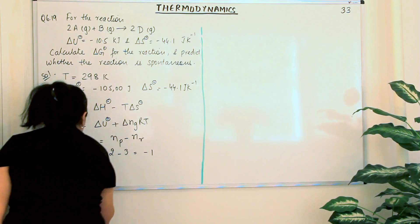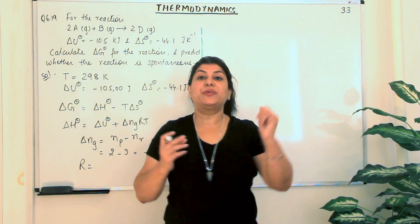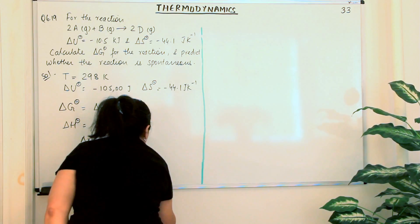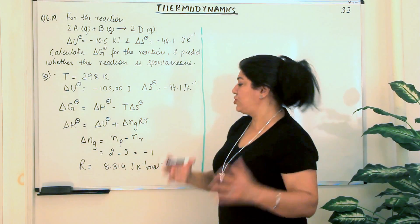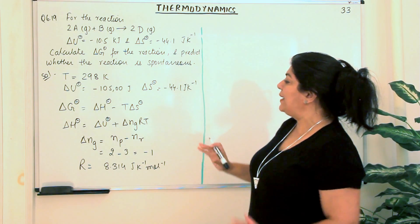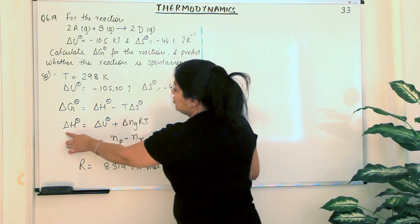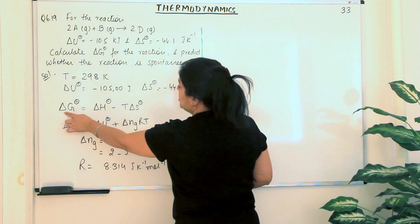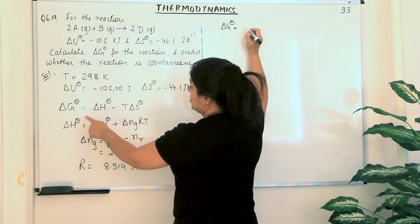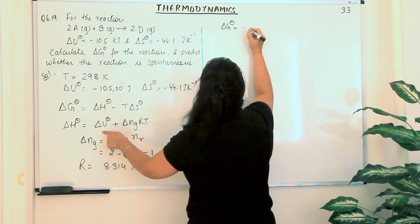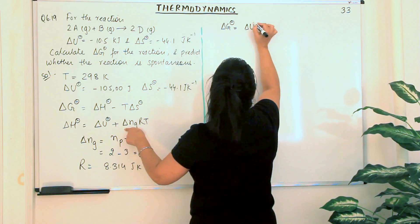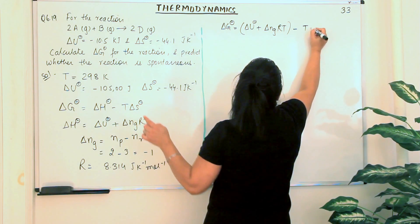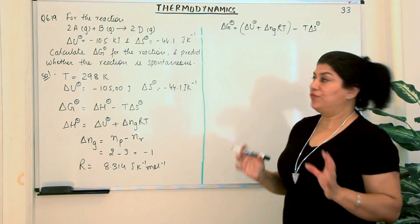R is the gas constant. Since we measure in joules, Kelvin, and moles, its value is 8.314 joules per Kelvin per mole. Having known all these values, we will substitute the value of delta H into the equation because our aim is to find delta G. So our equation becomes: delta G⁰ equals delta U⁰ plus delta Ng RT, minus T delta S⁰. That is our final equation from which we can calculate delta G.